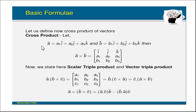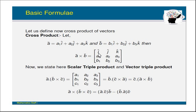Now let us define the cross product. Let a-bar equal a1 i-bar plus a2 j-bar plus a3 k-bar, and b-bar equal b1 i-bar plus b2 j-bar plus b3 k-bar. Then the cross product a-bar cross b-bar is defined using a matrix determinant with first row i-bar, j-bar, k-bar; second row a1, a2, a3; and third row b1, b2, b3. When you calculate the determinant, you get the value of a-bar cross b-bar.